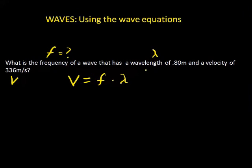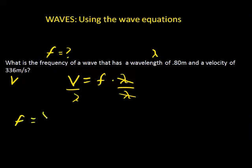We're given the wavelength and the velocity, and we're asked to find the frequency. We have to rearrange this equation to isolate f. To isolate f algebraically, we divide wavelength out of both sides of the equation. That factors out, so the new equation is: frequency equals velocity divided by wavelength.